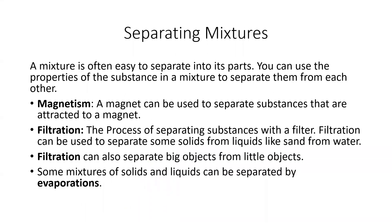Separating mixtures. A mixture is often easy to separate into its parts. You can use the properties of the substances in a mixture to separate them from each other. For example, you have magnetism — a magnet can be used to separate substances that are attracted to a magnet.